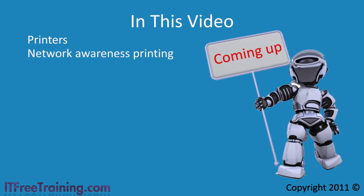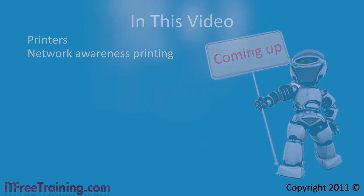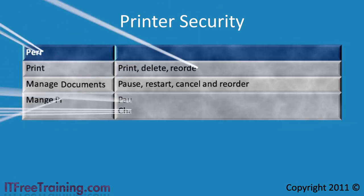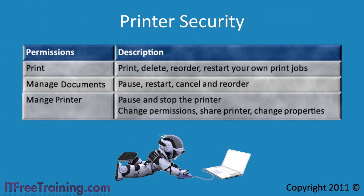Like a lot of the services the IT department offers, printing is one that when down, the end users will be quick to tell you about and demand to be fixed. With Windows there are three basic print permissions that determine what you can and cannot do with a printer.